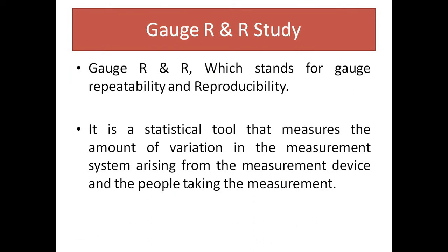What is Gauge R&R study? Basically, it is a part of measurement system analysis. Gauge R&R stands for Gauge Repeatability and Reproducibility. Repeatability and reproducibility terms are related to precision. The definition of Gauge R&R study is: it is a statistical tool that measures the amount of variation in the measurement system arising from the measurement device and the people taking the measurement.